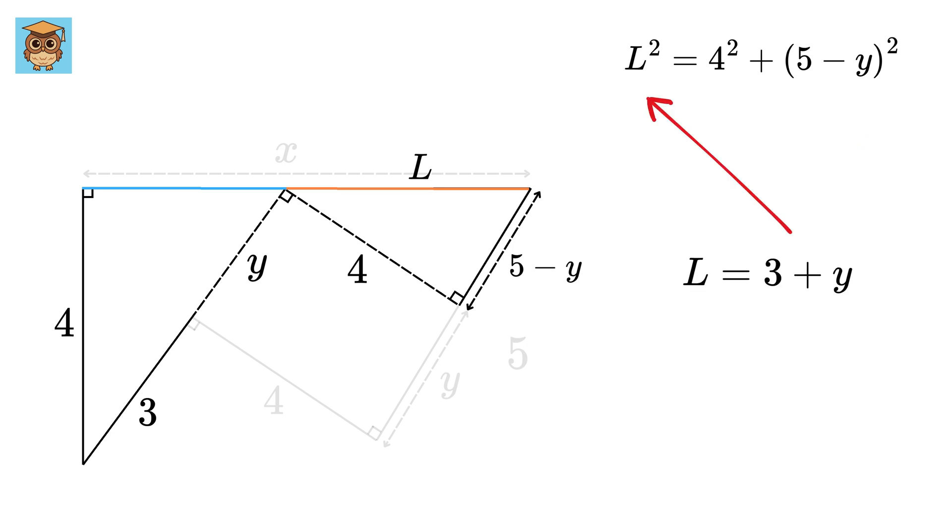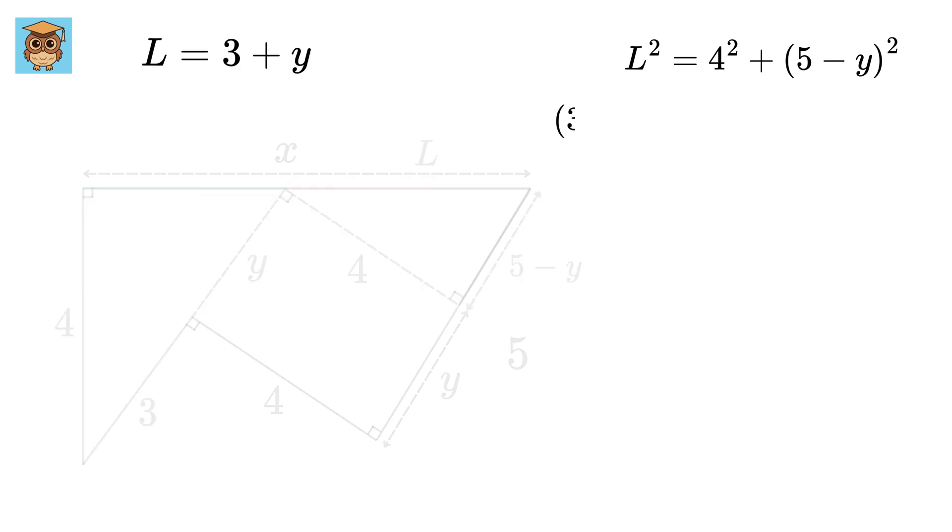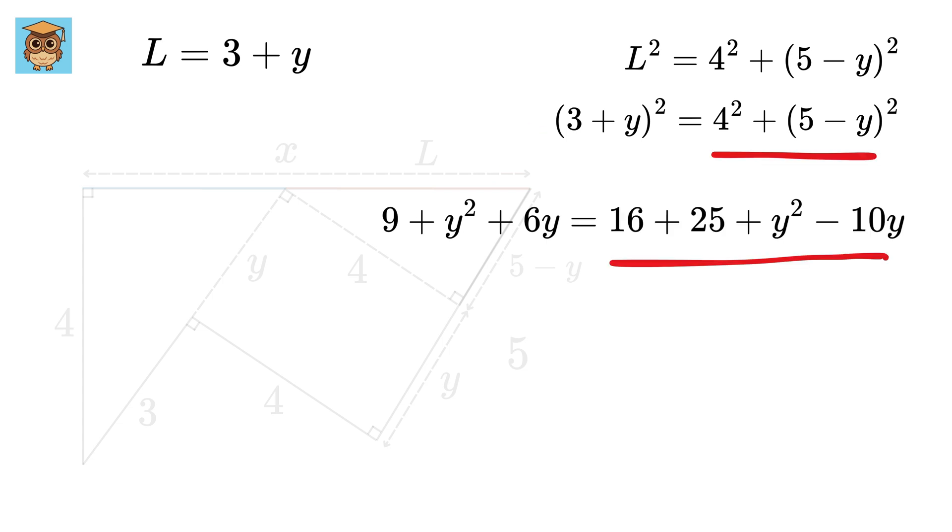We can put this value of L here and solve for Y. 3 plus Y whole square will be equal to 4 square plus 5 minus Y whole square. 3 plus Y square is 9 plus Y square plus 6Y. And the right hand side will be 16 plus 25 plus Y square minus 10Y. These Y squares will get cancelled out, and on rearranging, we get 16Y equals 32. This gives us Y equals 2.